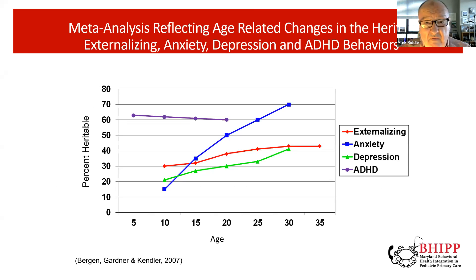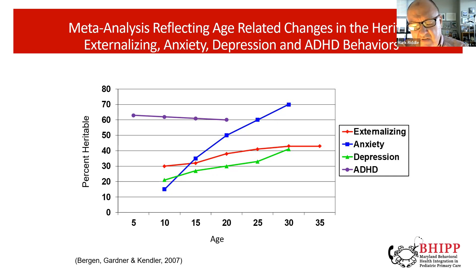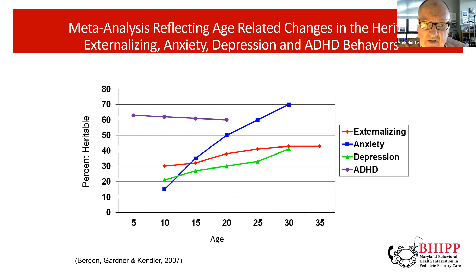Genetic factors are much more important than most of us had appreciated. Looking at a graph with age across the bottom and percent heritability on the vertical axis, ADHD shows about two-thirds of its cause attributable to genetic heritability. If you think about another disorder in childhood — autism — its heritability line looks almost identical to that for ADHD. So both have very important genetic vulnerabilities.